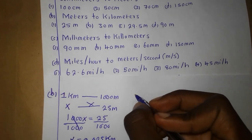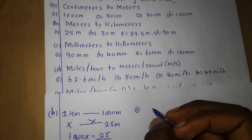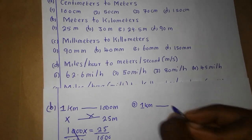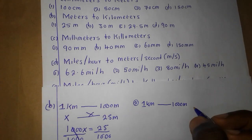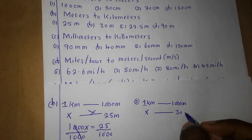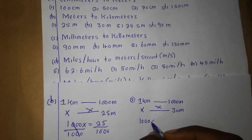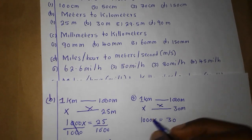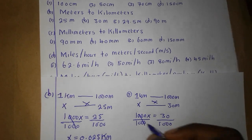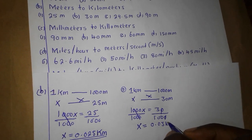Using the same concept for the second value: 1 kilometer is equivalent to 1000 meters. We have x corresponding to 30 kilometers. Cross-multiplying: 1000x = 30. Divide by 1000 on both sides and our final answer is 0.03 kilometers.